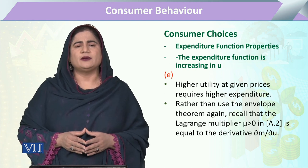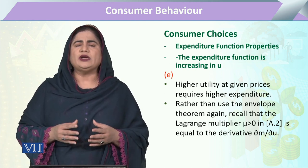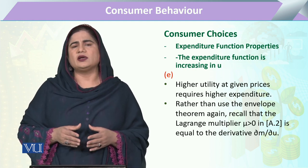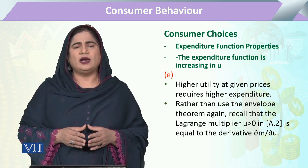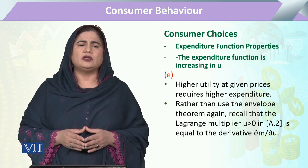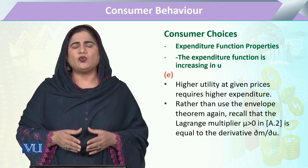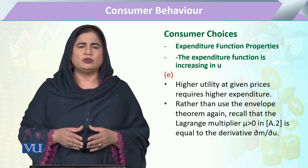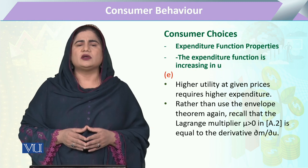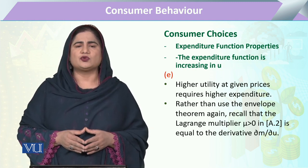When we utilized the Lagrange multiplier, we derived lambda, and that lambda told us that lambda is equal to the change in utility with respect to price — or equivalently, it is the marginal utility with reference to income.